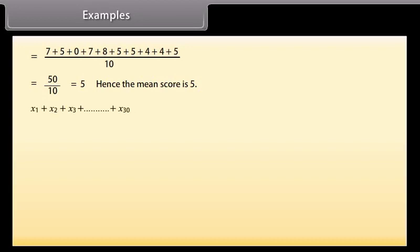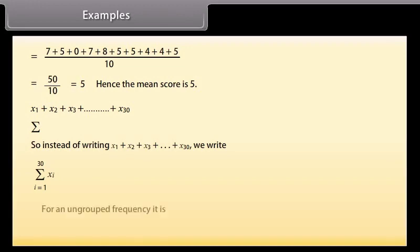If the observations are large, for example up to x30, then it would take a lot of time to calculate mean. To solve such problems we use the Greek symbol sigma for summation. So instead of writing x1 plus x2 plus x3 plus so on till x30, we write it in this way which is read as the sum of xi as i varies from 1 to 30.